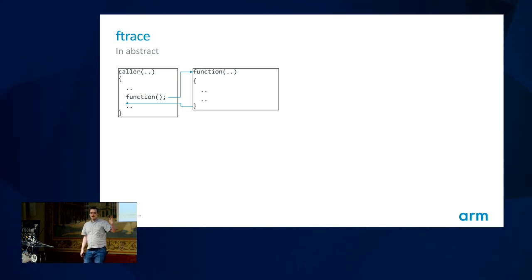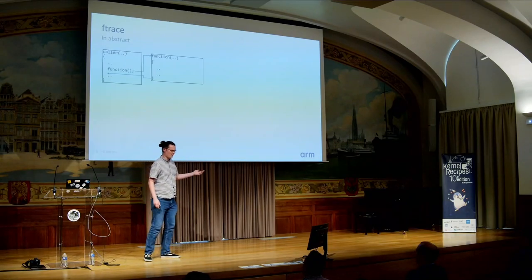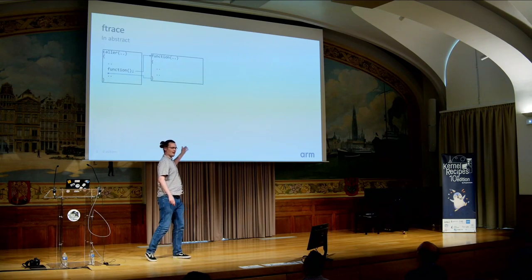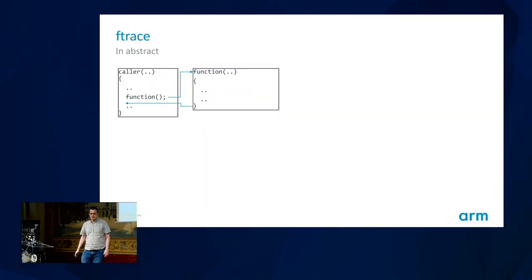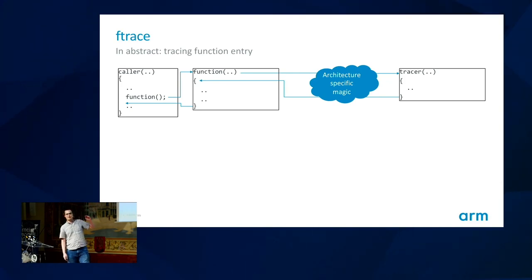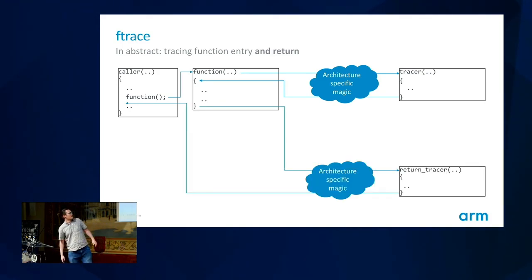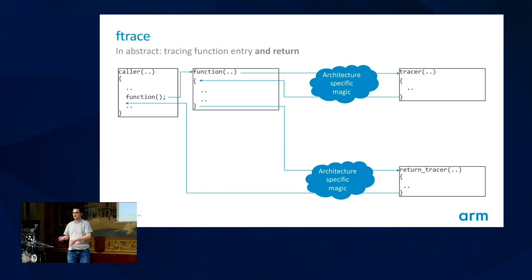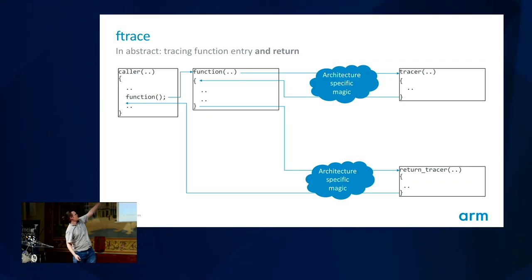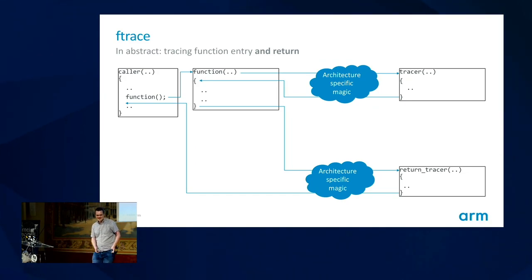Achieving that requires some architecture-specific code. Consider a function called by its caller: normally, caller calls function, function returns back immediately. But what we want is for the caller to call function, and before function does anything, we somehow get to our tracer, run the tracer, tracer goes back, function does its work and returns to caller — without function or caller knowing anything is happening. We also need to hook the return so we know when the function has actually returned.